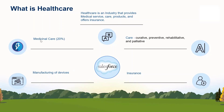Let's take an idea about these components. Medicinal care refers to the medicines which a doctor prescribes to any patient. Care comes in different types — curative care, preventive care, rehabilitative care, and palliative care. These can be availed at a care centre or at the patient's home. Then comes the manufacturing of devices — from a small syringe to a highly complex operating device, all those fall under this category.